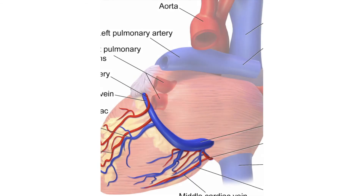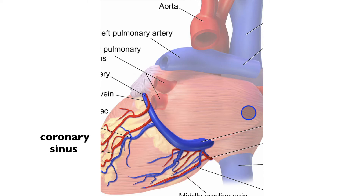Here's an image of the heart. The big difference from previous images is we are looking at a posterior view. Over here we have the superior vena cava and the inferior vena cava — in previous images they've been on the left side because we always looked from the anterior perspective. We are looking now from the posterior perspective because that's where we find the coronary sinus, which is this big blue vessel right here. The coronary sinus and the superior and inferior vena cava are all returning blood to the right atrium. The coronary sinus specifically is getting oxygen-poor blood from the cardiac veins, which are taking oxygen-poor blood from the myocardium back to the coronary sinus.